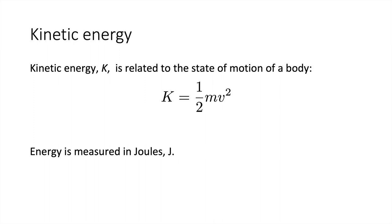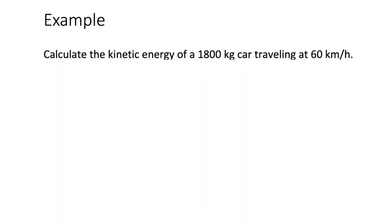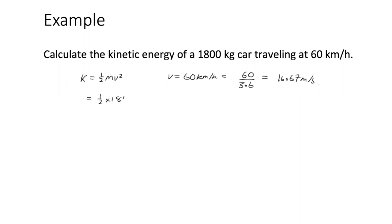Kinetic energy K is related to the state of motion of a body: K = ½mv², measured in joules (J). Example: the kinetic energy of an 1800 kg car travelling at 60 km/h (= 16.67 m/s) is K = ½ × 1800 × 16.67² = 2.5 × 10⁵ J.